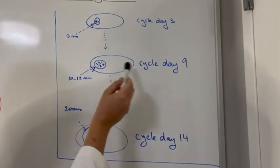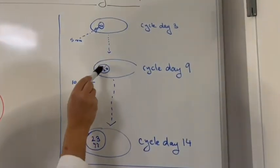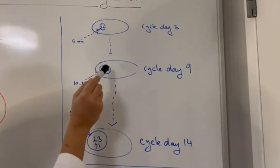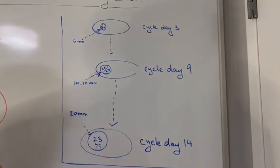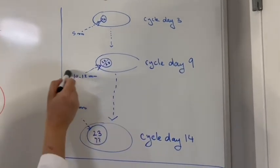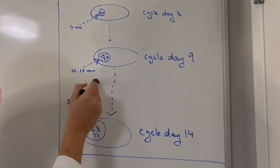So we need to get the egg out around cycle day nine, just before the division happens, because if the division happens it's too late. So now we want to do egg retrieval in a follicle that's small, 10 to 12 millimeters.